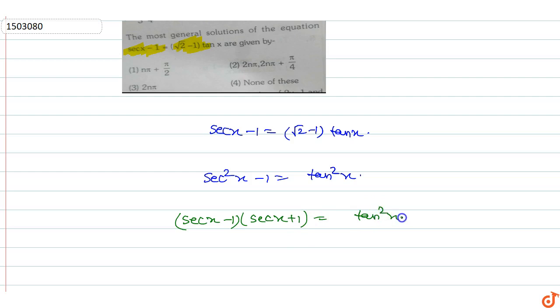Then this is equation first: sec x minus 1 equals root 2 minus 1 into tan x. This is equal to sec x plus 1 equals tan square x.